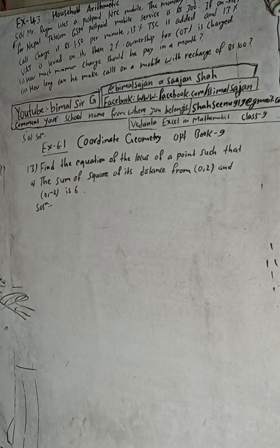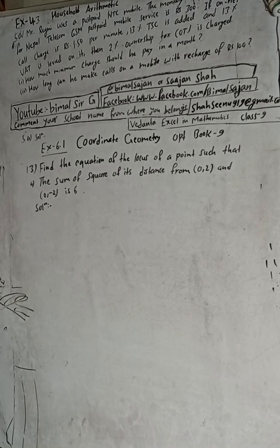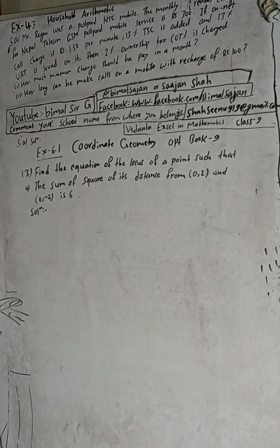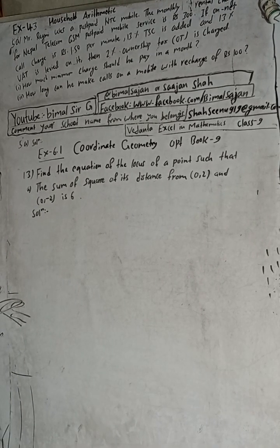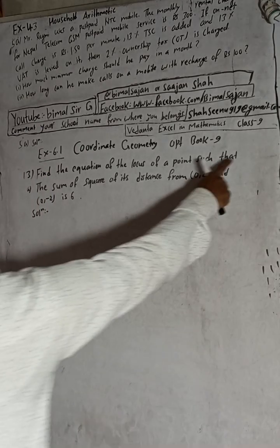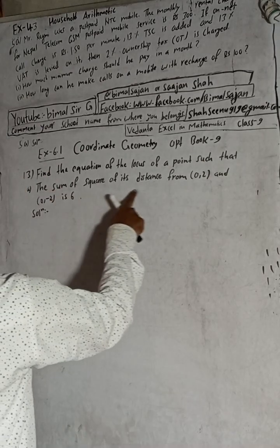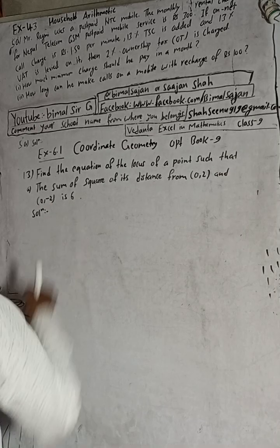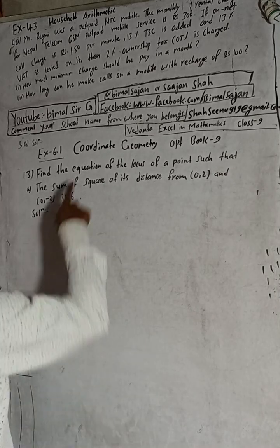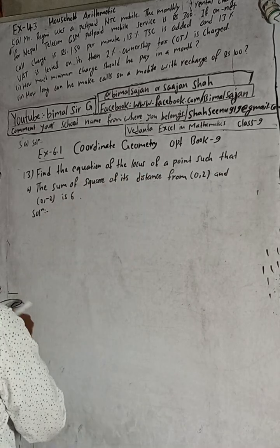Hi class 9 and 10 students, welcome back to Bhimalsarji YouTube channel. This is question number 13a, exercise 6.1, coordinate geometry, optional mathematics book class 9. The question is: find the equation of the locus of a point such that the sum of the squares of its distance from (0, 2) and (0, -2) is 6.